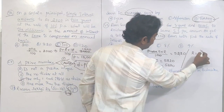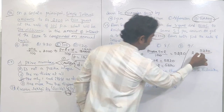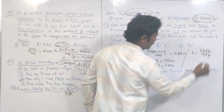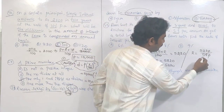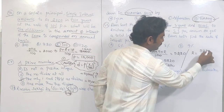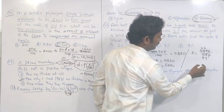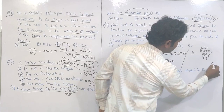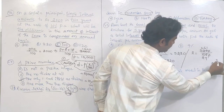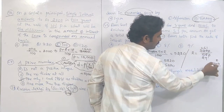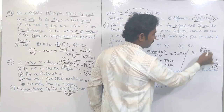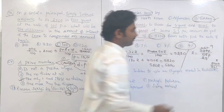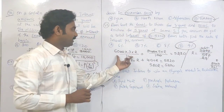R = 5,220 / 580. Cancelling zeros: 522 / 58. Dividing, checking with 9 tables — 29 × 9 = 261. So the rate of interest is 9%. Simple interest was taken on both Shiva and Krishna — total 5,220 — and from this we calculated the rate of interest R as 9%.